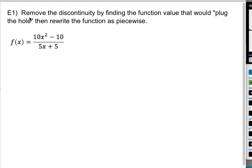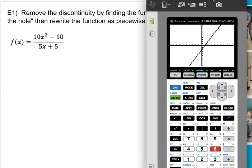Here we have a function f(x) equals the quantity 10x squared minus 10 all over 5x plus 5. We're asked to remove the discontinuity by finding a function that would plug the hole and then rewrite this entire function as piecewise. So here's the mathematical thing that we're going to do to get there. First thing I want to point out, I graphed this in my calculator.